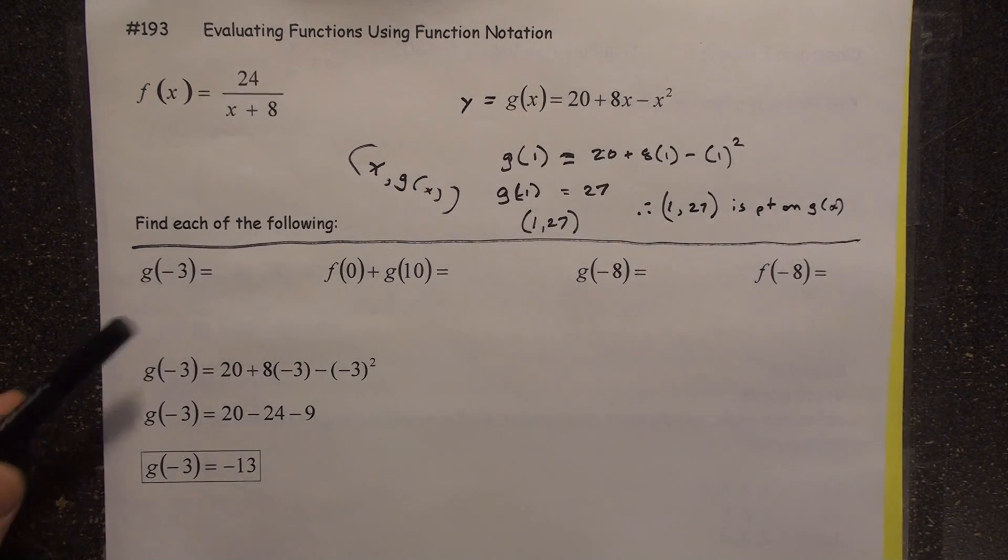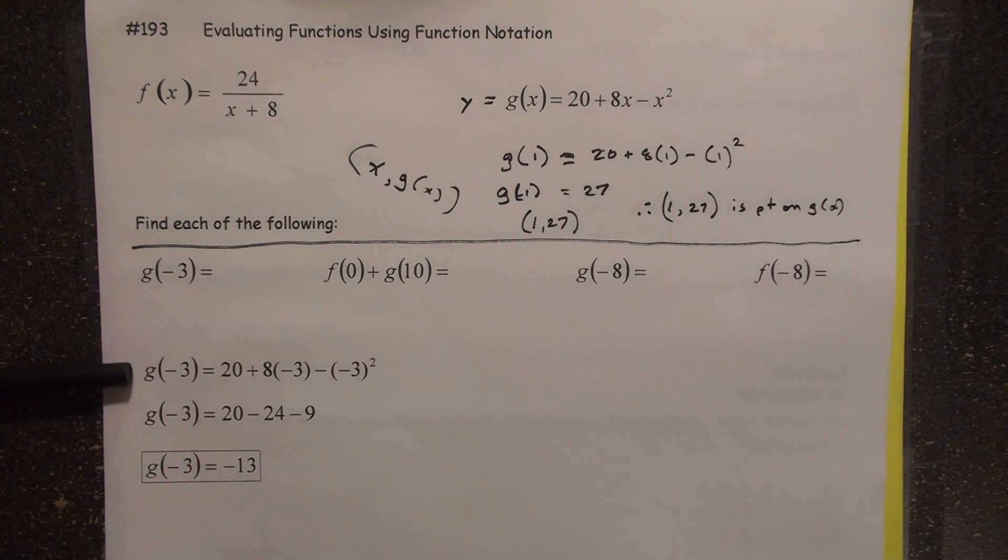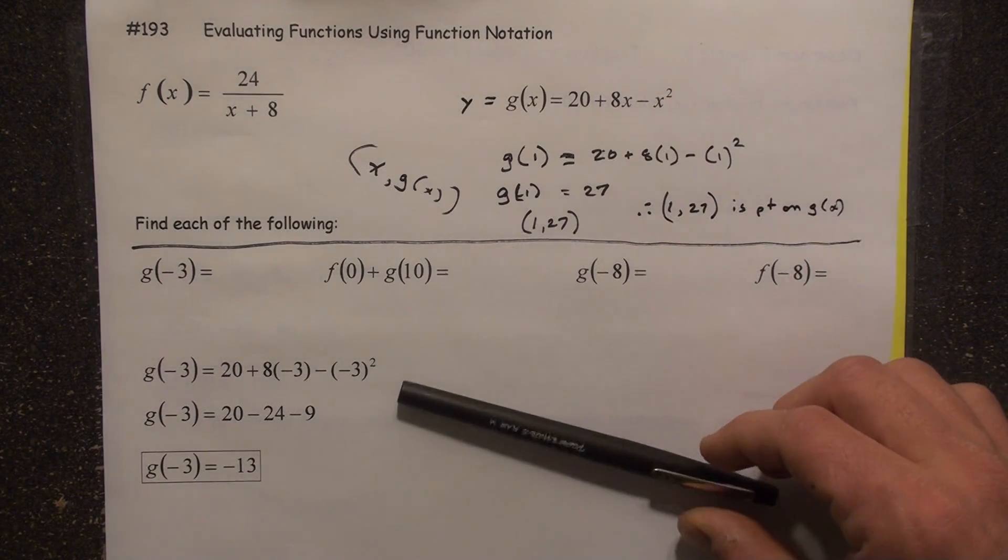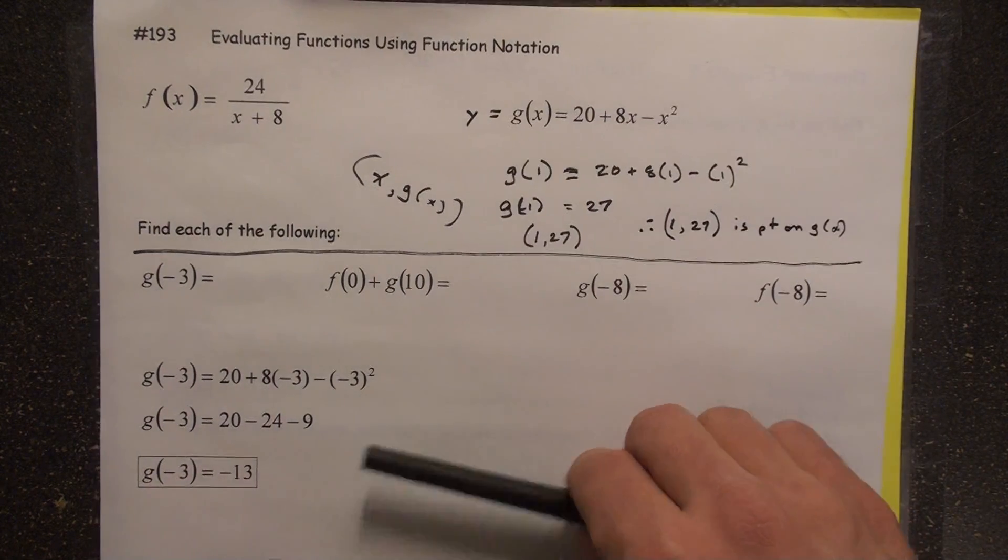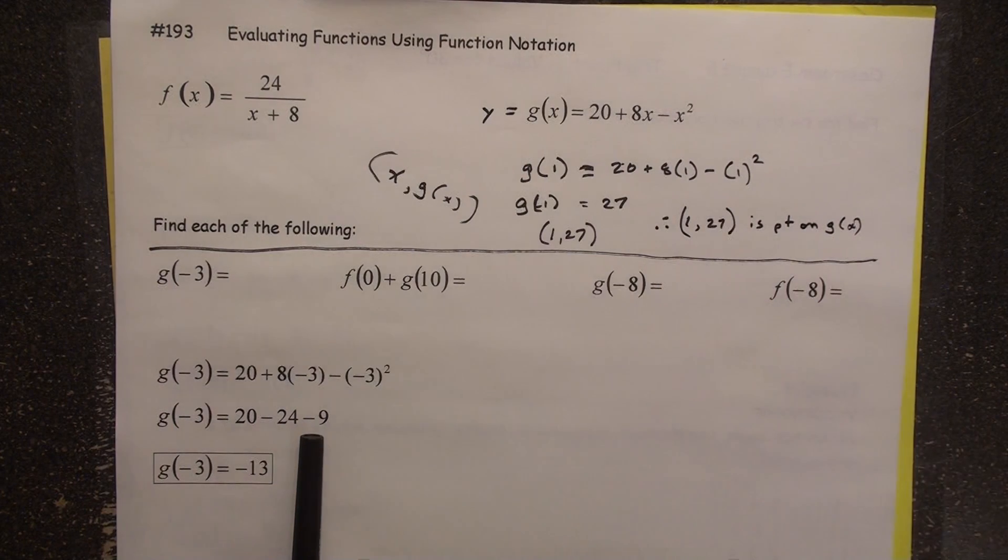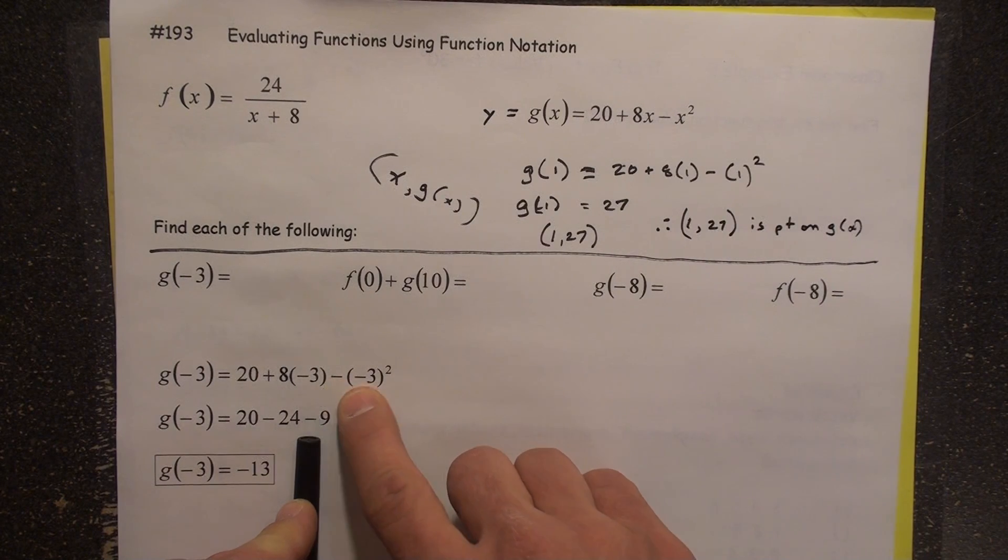So we're going to calculate g of negative 3. Many students mess up on this one right on the first step. I think everybody can safely agree that we are definitely looking at this: g of negative 3 equals 20 plus 8 times negative 3 minus whatever negative 3 squared turns out to be. Now right here, some of you guys are saying, well, wait a minute. How come that's not plus 9? Come on, man. I just found a mistake. I'm going to email this guy.